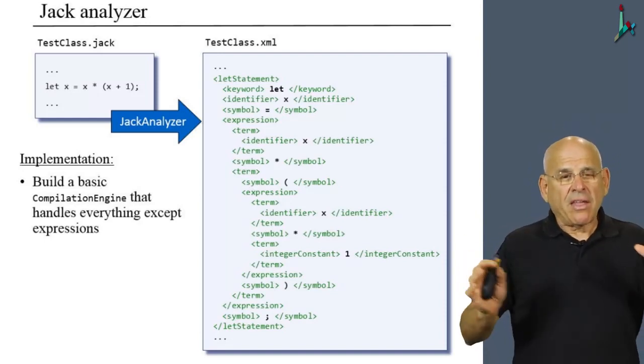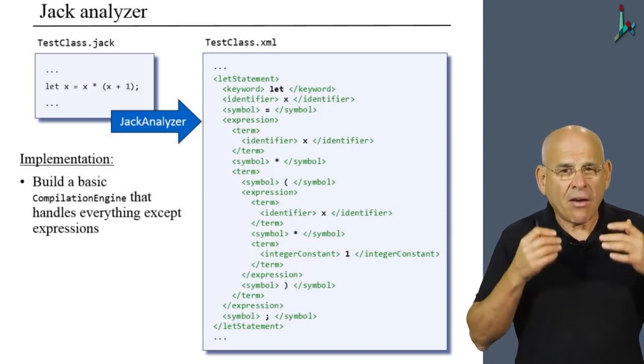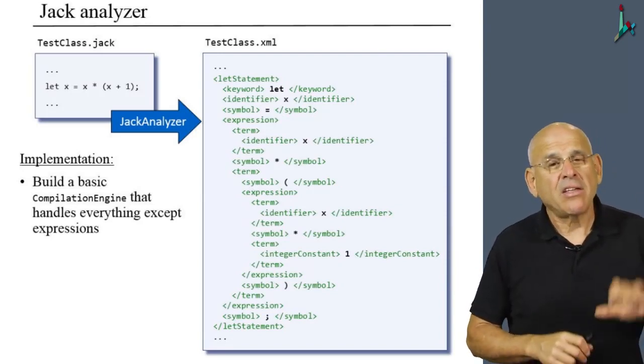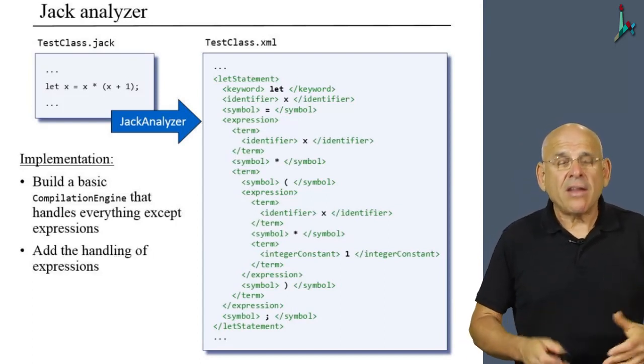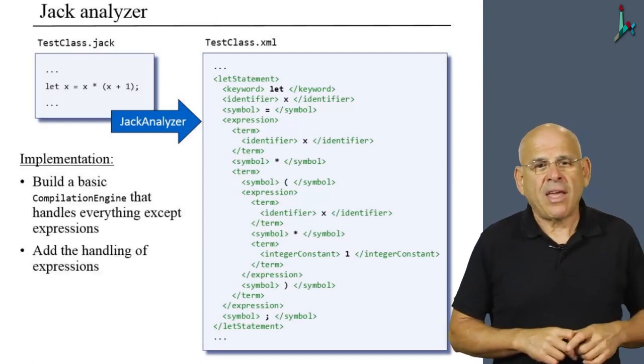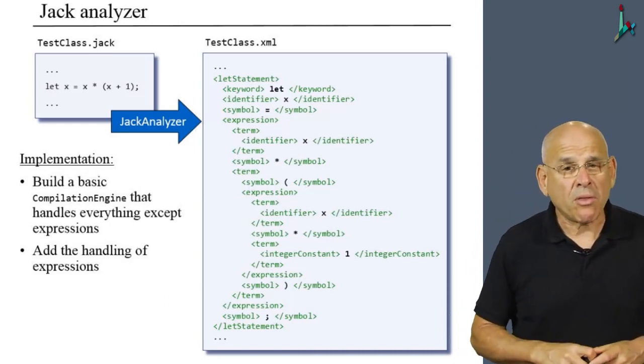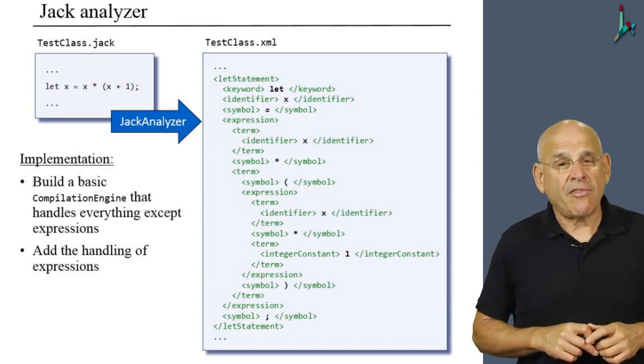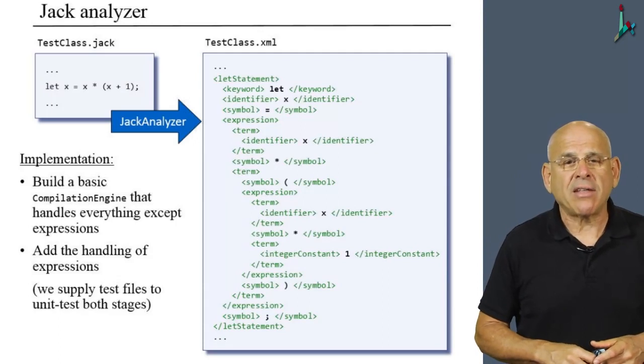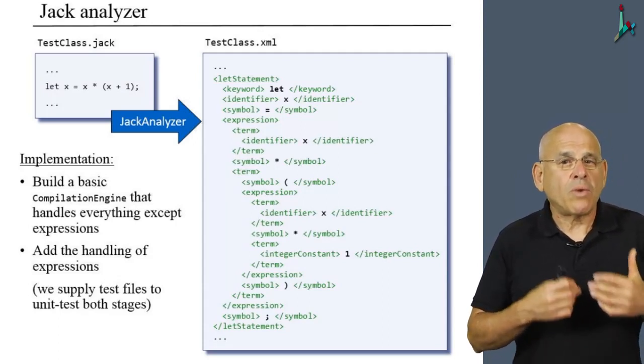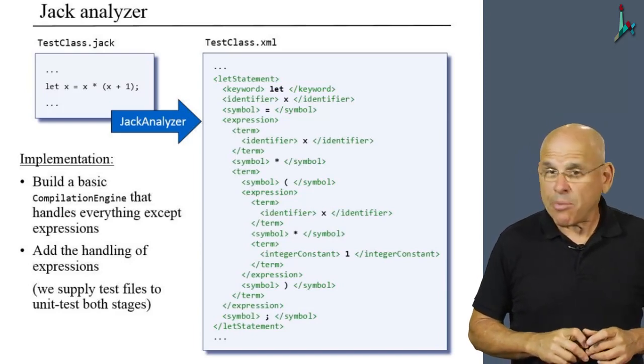Basically, we recommend that you begin by writing a basic compilation engine that handles everything except for expressions. Why? Because expressions are a little bit of a headache, so we prefer to handle them separately. And only then, we're going to add the handling of expressions. In order to support this staged development strategy, we're going to provide you with test files that would enable you to unit test each one of these steps separately.